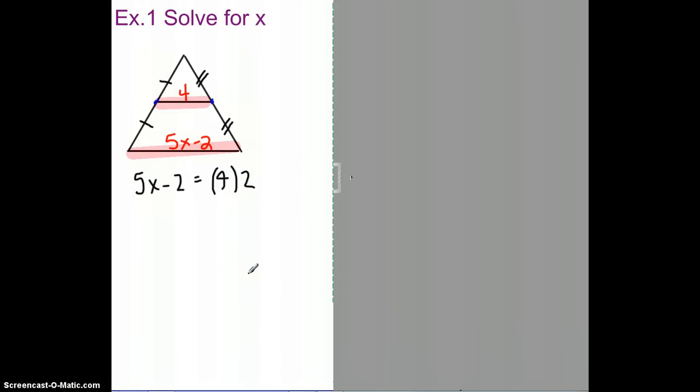So, if I were to look at this segment, this 4 times 2 would give me 8. So, it would be 5x minus 2 equals 8. I could add 2 to both sides. 5x equals 10, and then divide both sides by 5. And they get x equals 2.